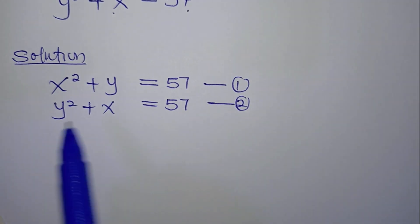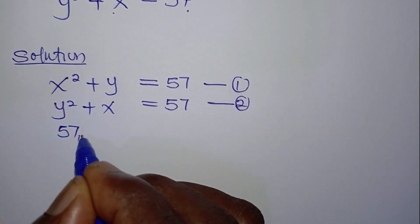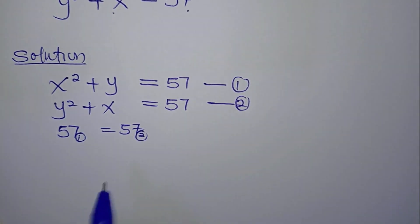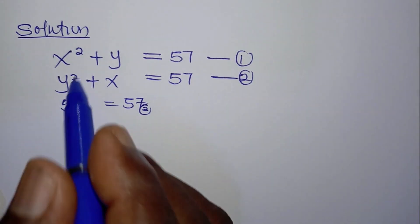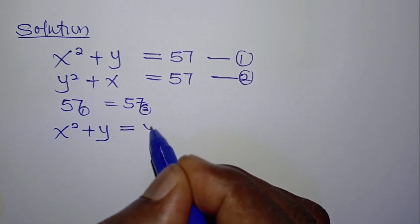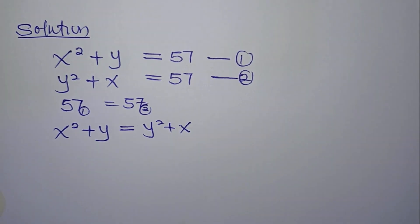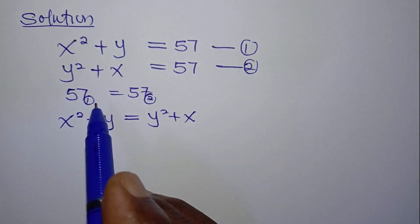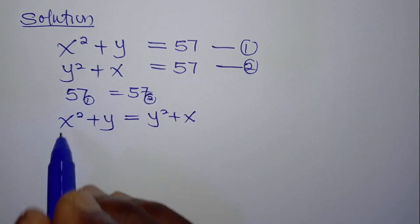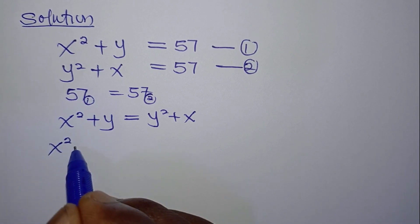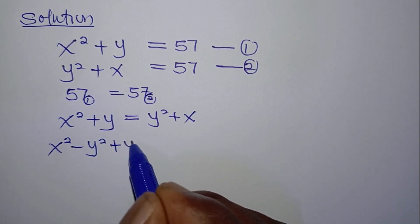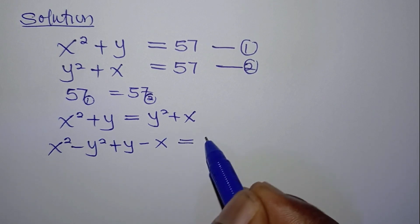So if both of them are equal, then we can say 57 in equation 1 equals 57 in equation 2. So we can equate the expressions: x squared plus y equals y squared plus x. What we do next is rearrange this equation, so we have x squared minus y squared plus y minus x equals zero.